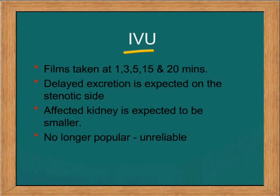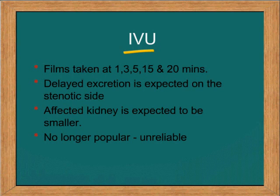IVP is no longer popular and it has been years since we have seen anyone doing it. However, at least historically, contrast was given and films taken at 1, 3, 5, 15, and 20 minutes. The 1-minute film should show the delay in excretion and delay in the nephrogram when compared to the normal side. It also helped to assess the size of the kidneys. Today we hardly perform such a procedure.